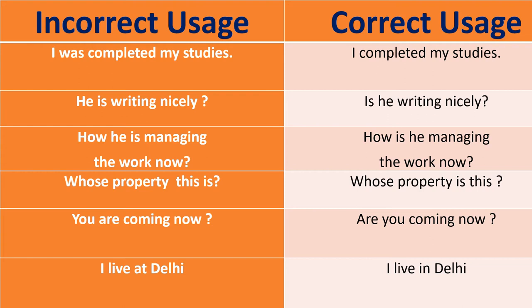'How he is managing the work now' — again, the helping verb comes first after the question word: 'How is he managing the work now?' 'Whose property this is' — correct: 'Whose property is this?' 'You are coming now' — in question form: 'Are you coming now?' 'I live at Delhi' — correct: 'I live in Delhi.'